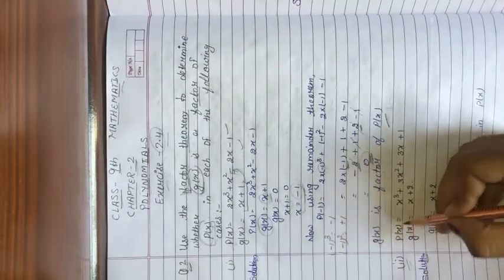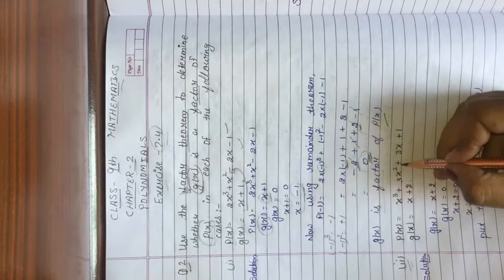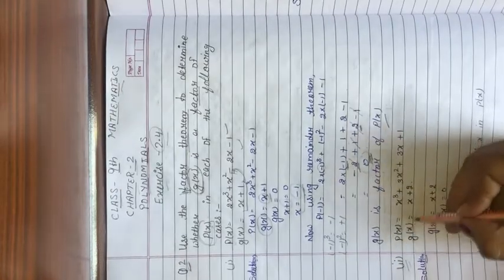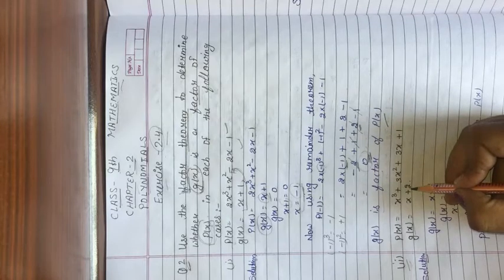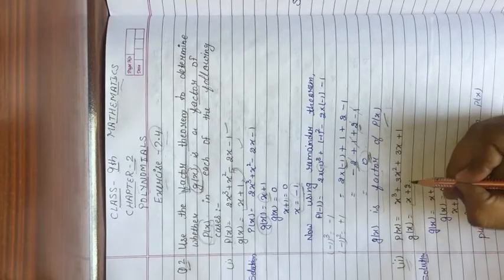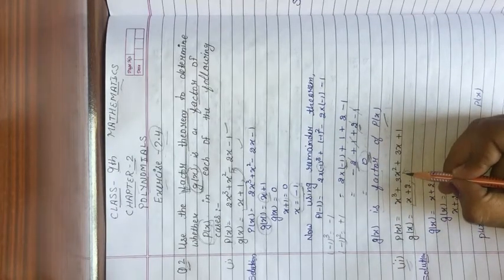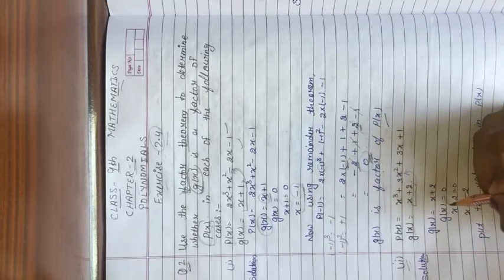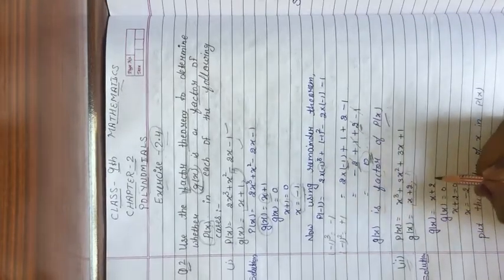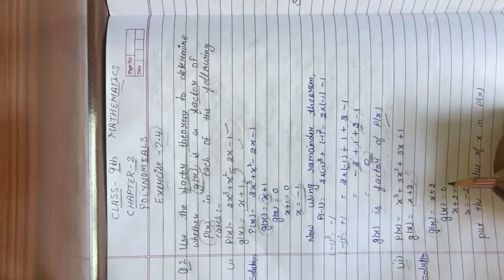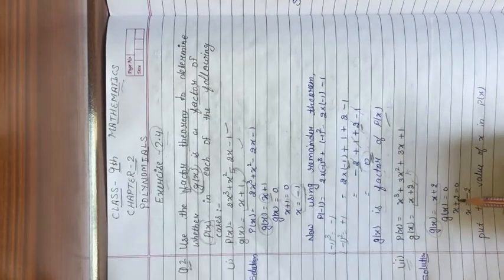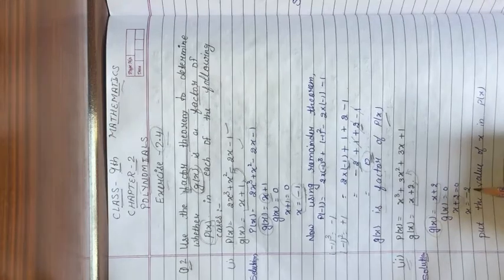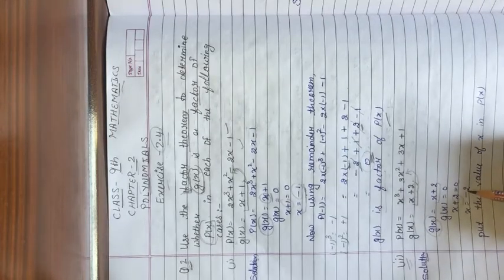Second part: p(x) equals x³ + 3x² + 3x + 1, and g(x) equals x + 2. We need to find out if x + 2 is a factor or not. First, we find the value of x: set g(x) = 0, so x + 2 = 0, giving x = -2.